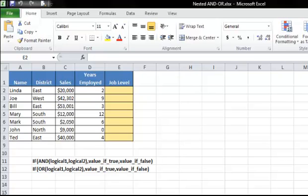Salespeople who have been employed for more than five years and have annual sales of more than $10,000 should be assigned a job level code of 2, and all others should have a job level code of 1. To include two criteria when both criteria must be met, you need to nest an AND function within your IF statement.